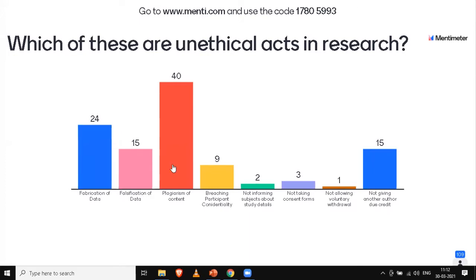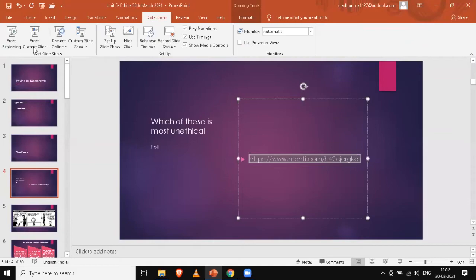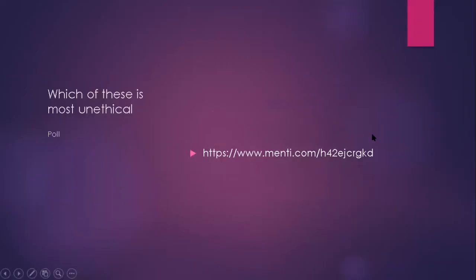Plagiarism and not giving another author due credit are not the same. Plagiarism is copying from multiple sources without attribution. Not giving another author credit is where someone has worked with you on a paper but you have not listed them as author. They're two different things. The idea is all of it is unethical — all those options on the poll are unethical. I just wanted to see what, in your opinion, seems like the most important thing.